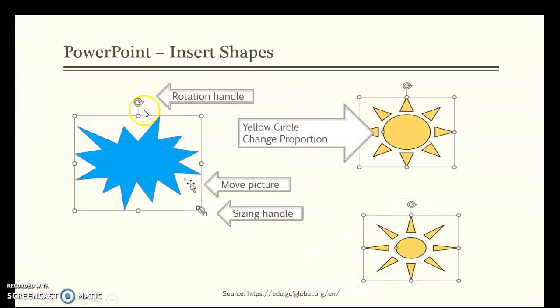Here we have the rotation. The object is selected. The four arrows is to move the object or picture. The diagonal is to make both the width and height smaller or larger. This little yellow circle is an adjustment handle. If you click that, you can make the sun either wider or more narrow. Not all pictures have adjustment handles, but some do.